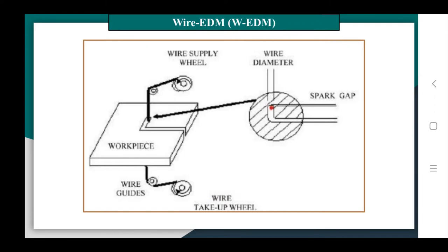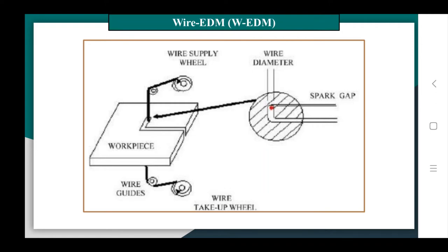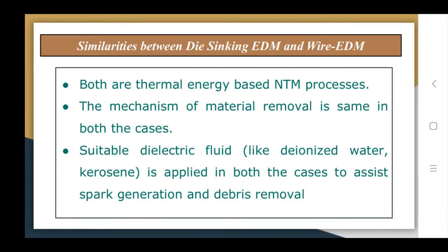Wire EDM, also known as wire-cut EDM, employs a conductive wire as a tool electrode. This wire is continuously moved between two fixed pulleys and the workpiece is fed against the wire. The spark is generated between the wire and workpiece, causing material removal. This process is suitable for through-profile cutting or sample preparation; it cannot make any blind features as the wire is required to pass through the workpiece.